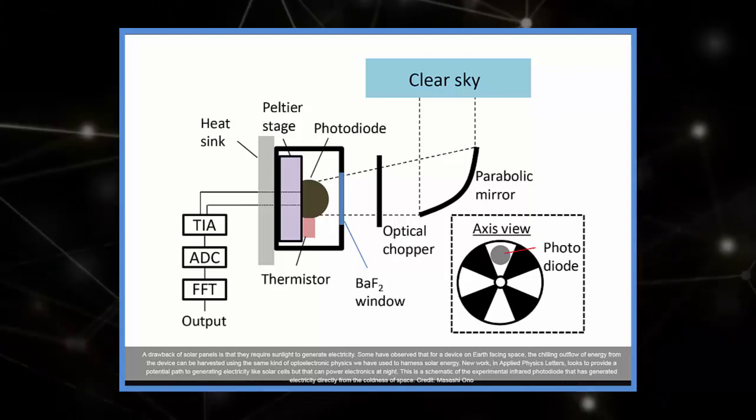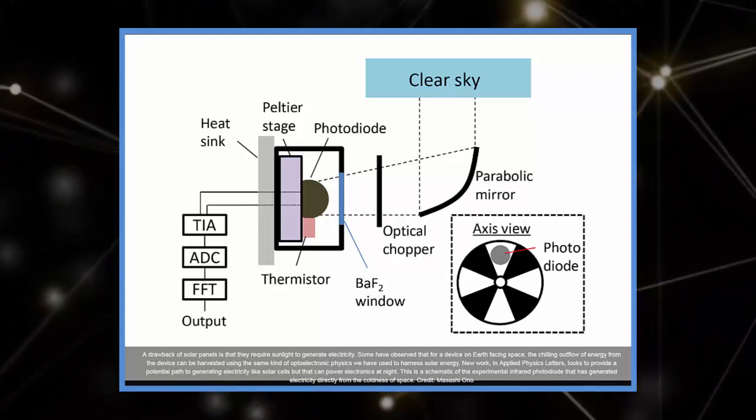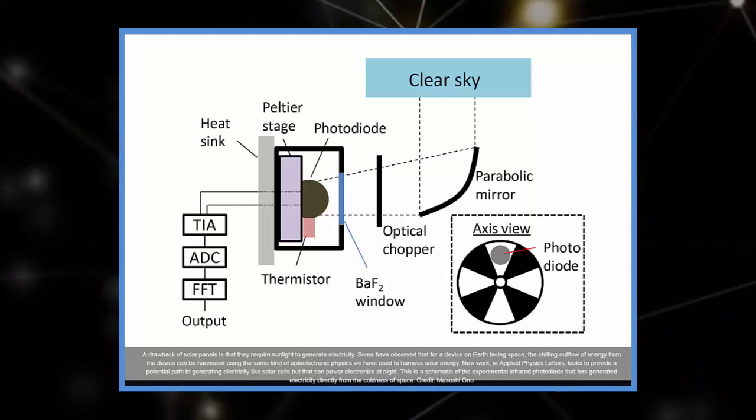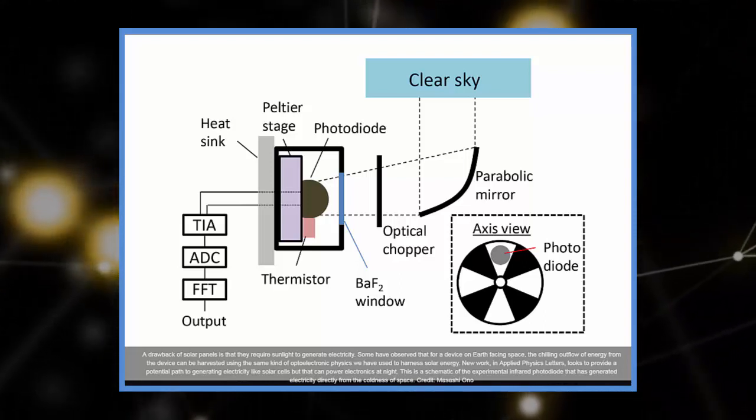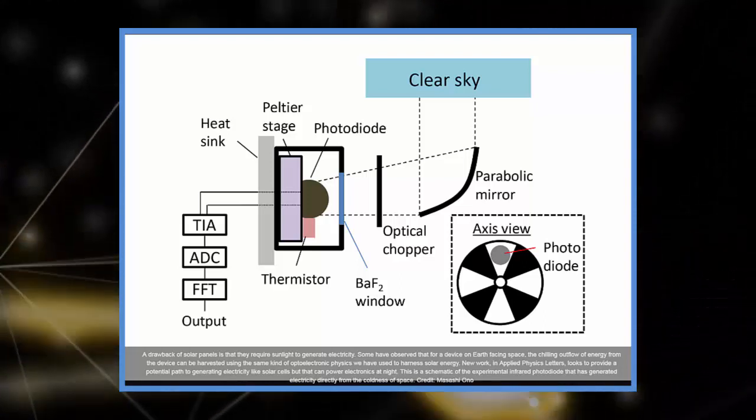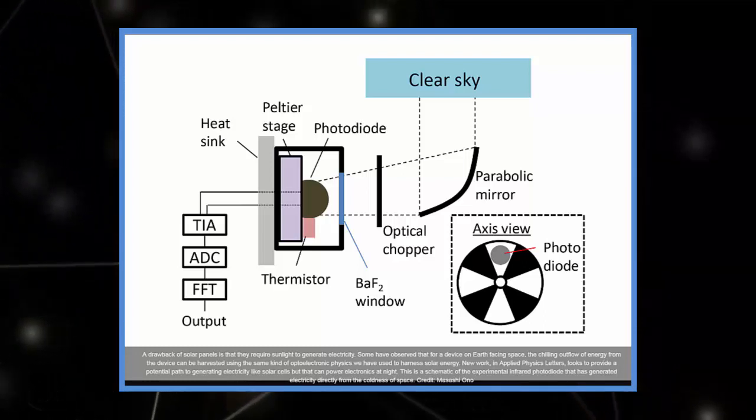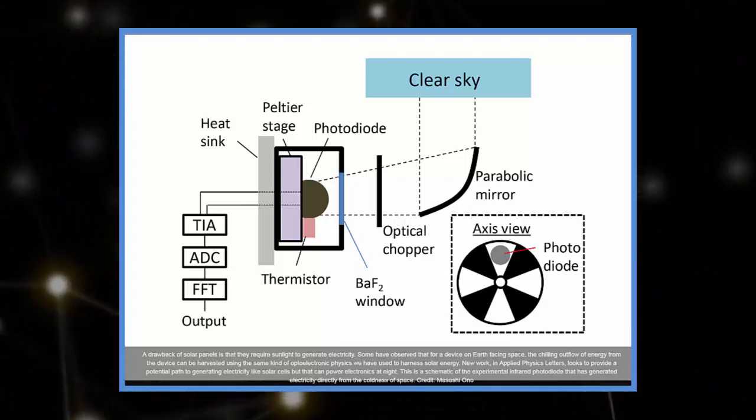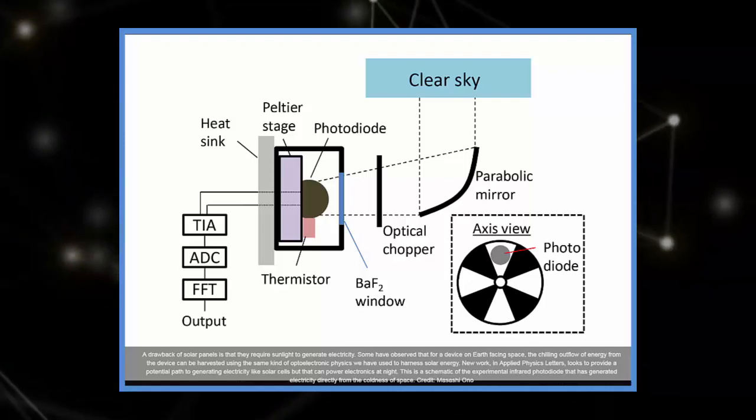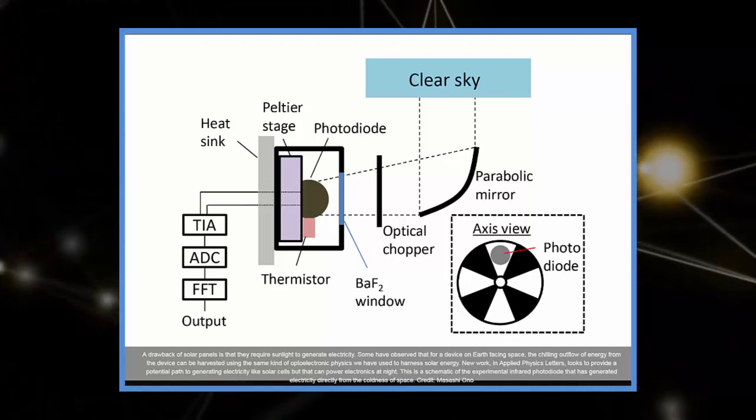By comparison, today's solar panels generate 100 to 200 watts per square meter. While the results show promise for ground-based devices directed to the sky, Fan said the same principle could be used to recover waste heat from machines. For now, he and his group are focusing on improving their device's performance.